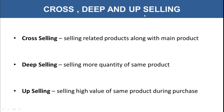Cross selling, deep selling, and upselling are very relevant concepts in today's marketing. Cross selling is selling related products along with the main product. For example, if a customer comes to buy a phone, you offer not just the phone but also the cover, accessories like earphones, and so on. You are selling more products which act as accessories along with the main product. This increases the monetary value because at a single point of contact you have been able to sell more than what the customer originally came for.